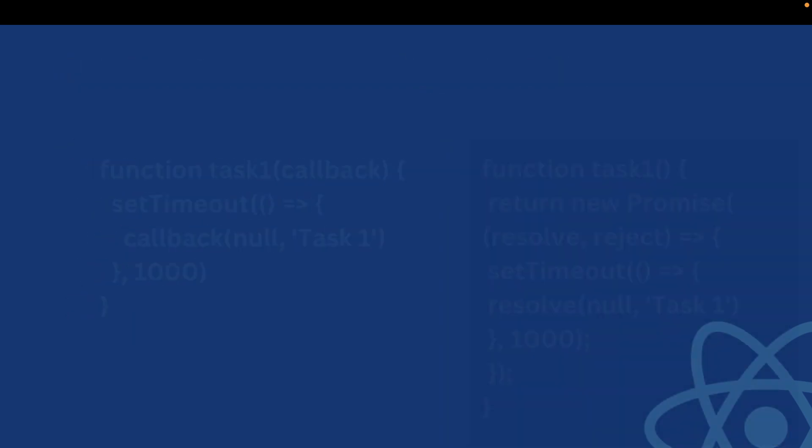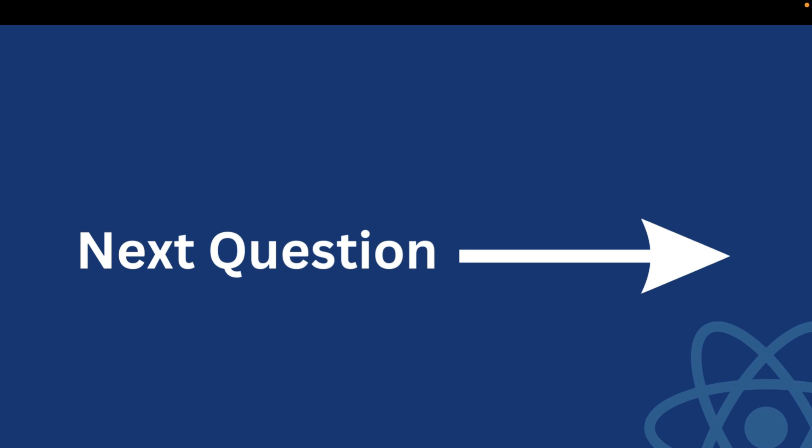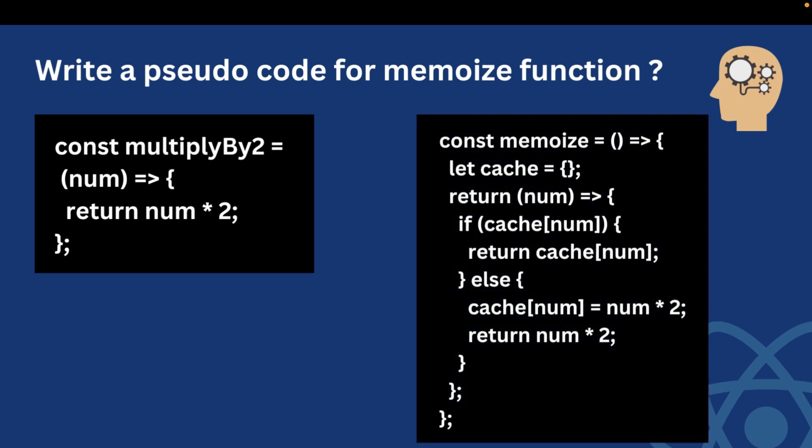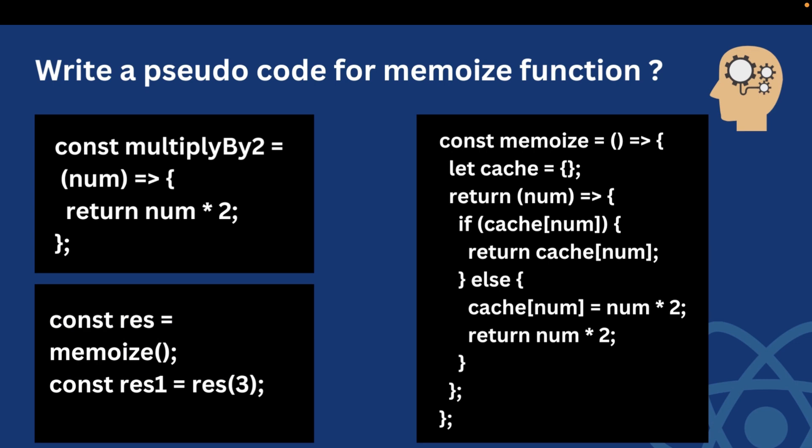The next question was to write a pseudocode for a memoize function. Suppose multiply-by-2 is a costly function. The solution: we create a memoize function with a cache object, then return another function taking the input. We check if the result corresponding to that num is already in the cache — if yes, return it from cache; otherwise recompute it, store it at that key in the cache, and then return it.